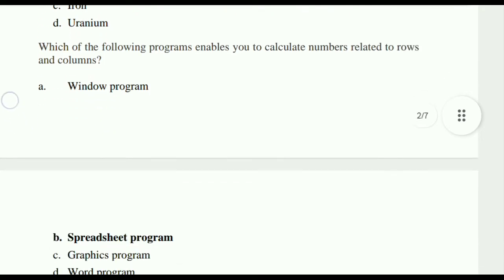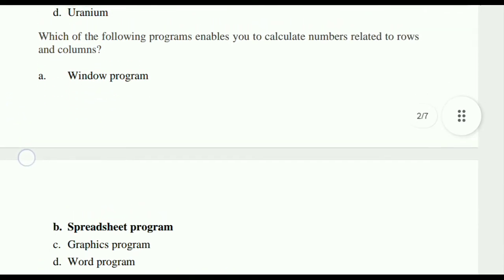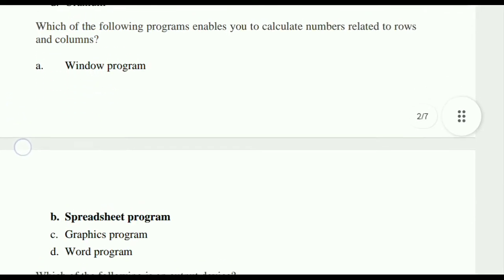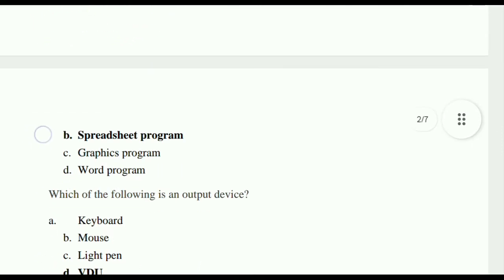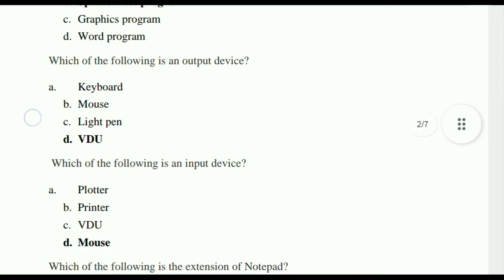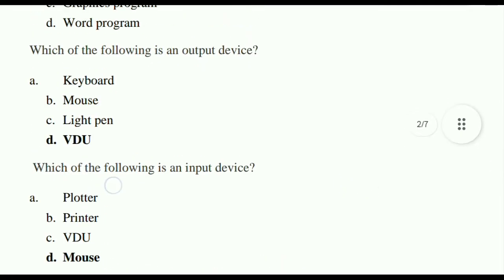Which of the following programs enables you to calculate numbers related to rows and columns? The correct answer is a spreadsheet program, Option B. Which of the following is an output device? Options are keyboard, mouse, light pen, and VDU. In that, VDU is the output device.